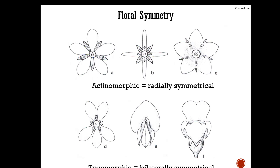Flowers are also described by their symmetry. Actinomorphic means radially symmetrical — if you slice it in any direction it would look exactly the same. Zygomorphic means bilaterally symmetrical — there's only one direction you could slice it where both sides would look exactly the same.